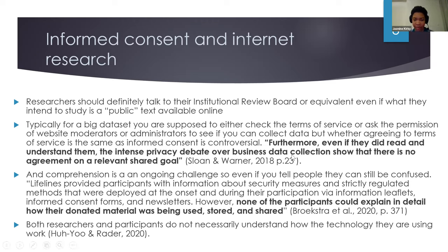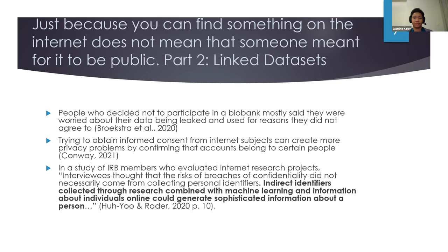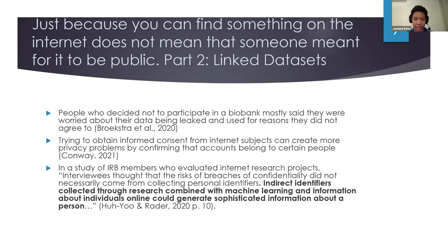Researchers and participants may not fully understand how the technology being used in the research works. There's also the issue of linked data sets — people said they didn't want to participate in the biobank because they worried their data would be leaked and used for reasons they didn't agree to. Trying to obtain informed consent from internet subjects can create more privacy problems, since you have to confirm that accounts belong to people, which identifies them in a way that might not have happened otherwise. IRB members are also worried about indirect identifiers, since de-identification has become much harder as re-identification is now easier. Anonymity in research has limits, and linking has been a big issue.